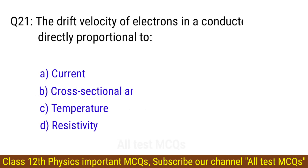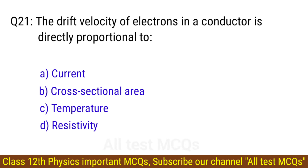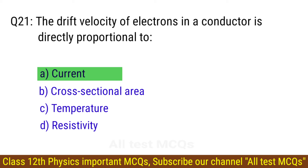Question number 21. The drift velocity of electrons in a conductor is directly proportional to? The right answer is option A: Current.